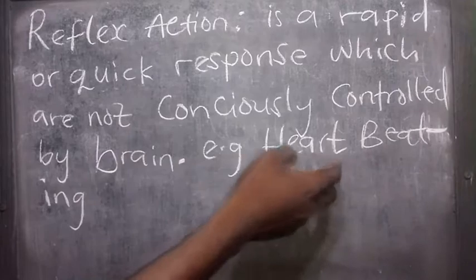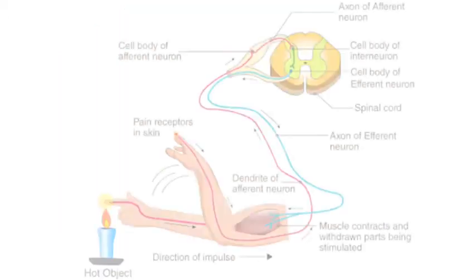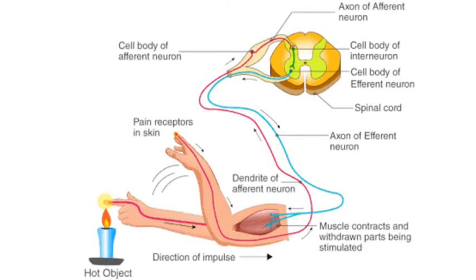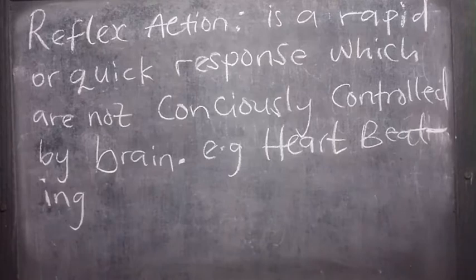Examples of reflex action: a heartbeat, that is the heart beating, a sudden movement of our hand when we touch a hot or harmful substance, and also sneezing and coughing are all reflex actions since they are not controlled by our brain. Once they come you must do them.